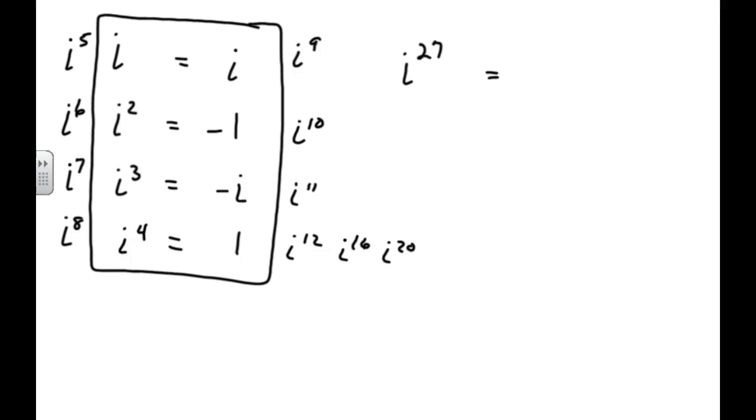Now, so how can you deal with that as a student is you can take this 27, whatever the exponent is, take your exponent and divide it by four. When you take your exponent and divide it by four, you're going to get some number and then sometimes you'll have a decimal. Sometimes you'll have a .25. Sometimes you'll have a .5. Sometimes you'll have a .75. And sometimes you won't have a decimal at all. You'll just have a whole number.